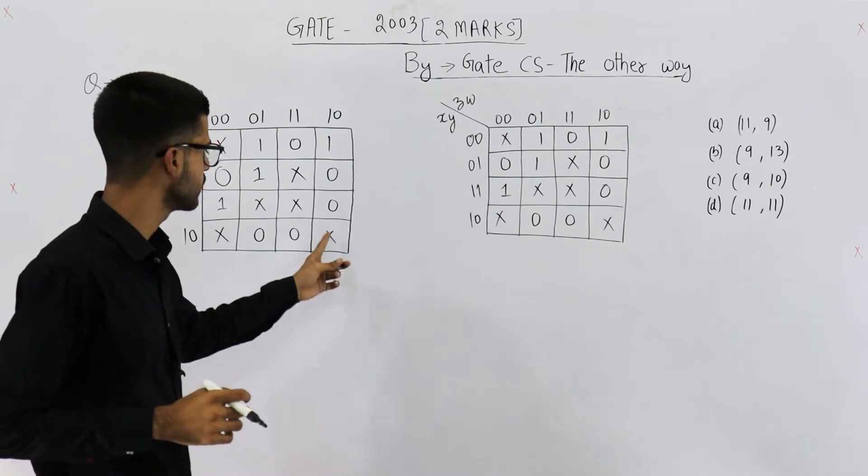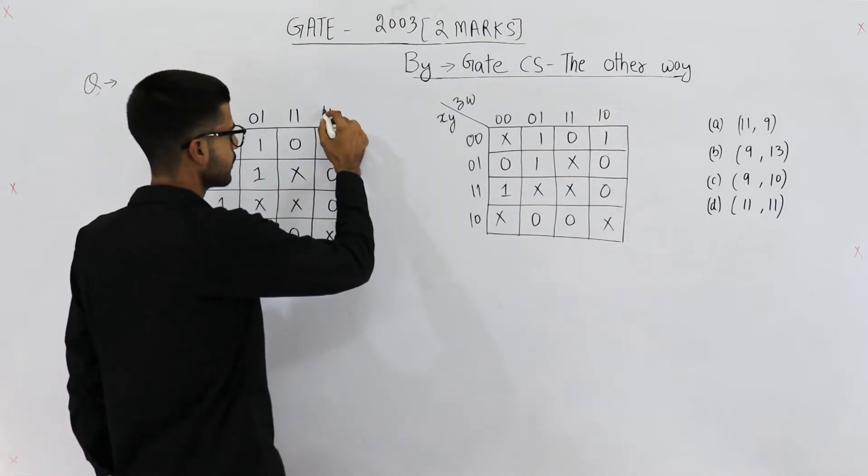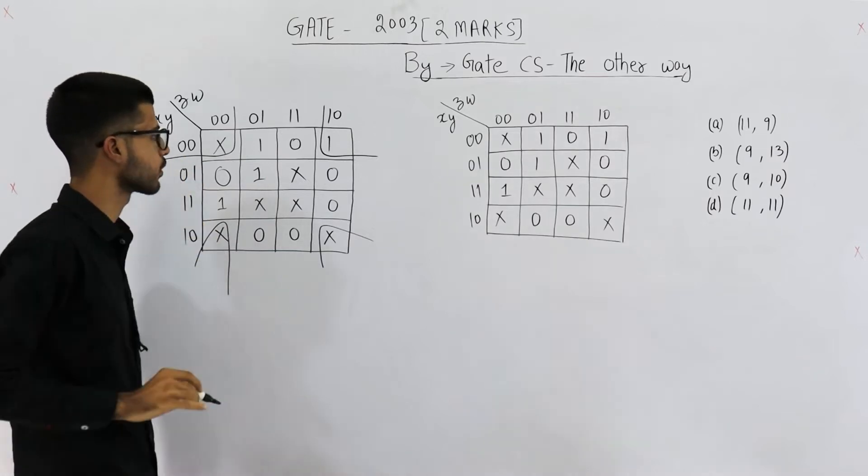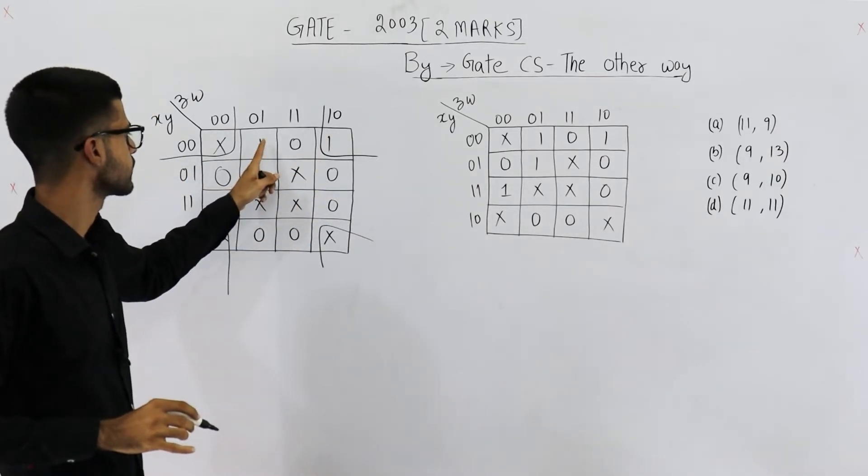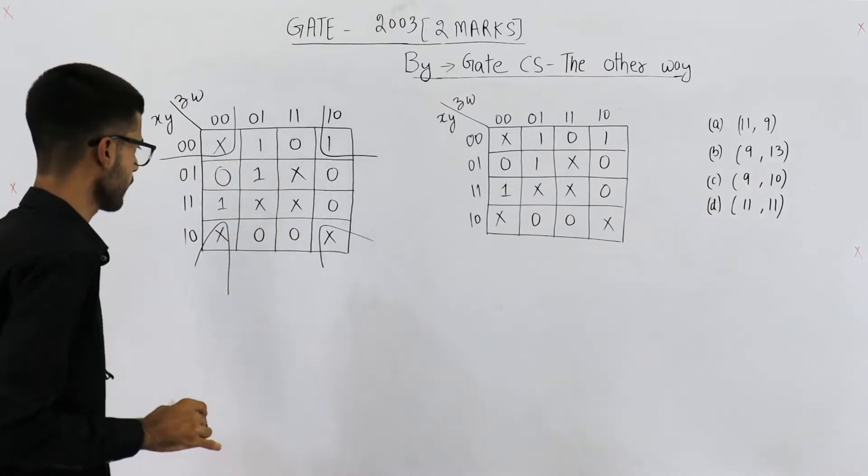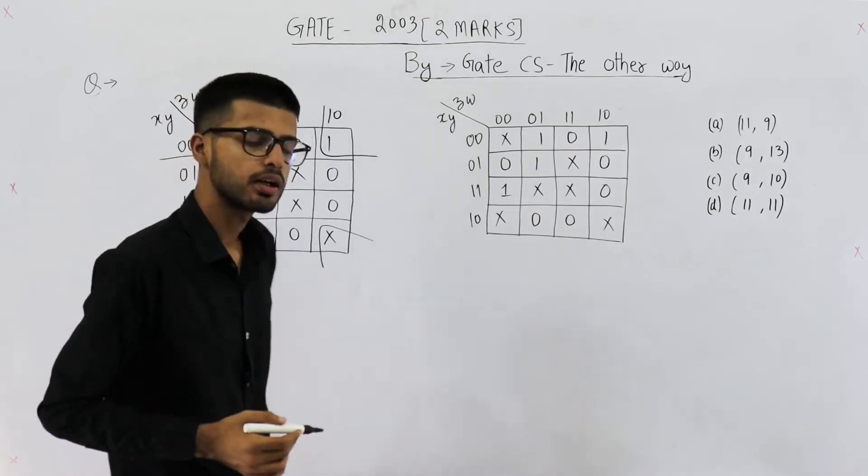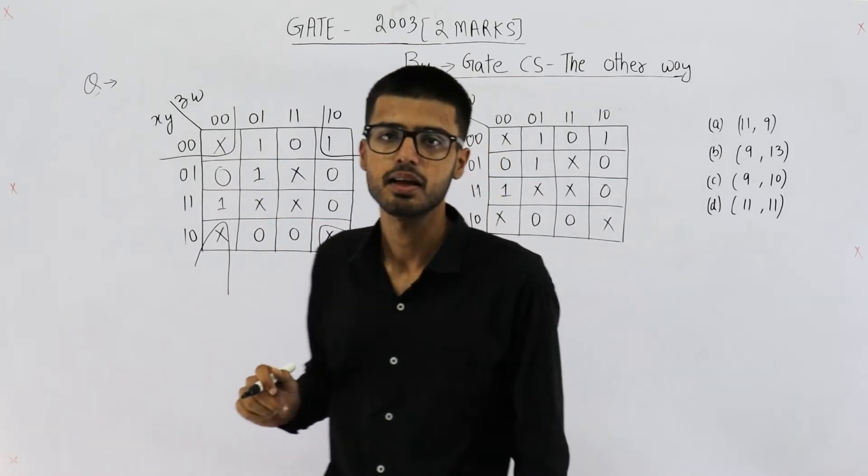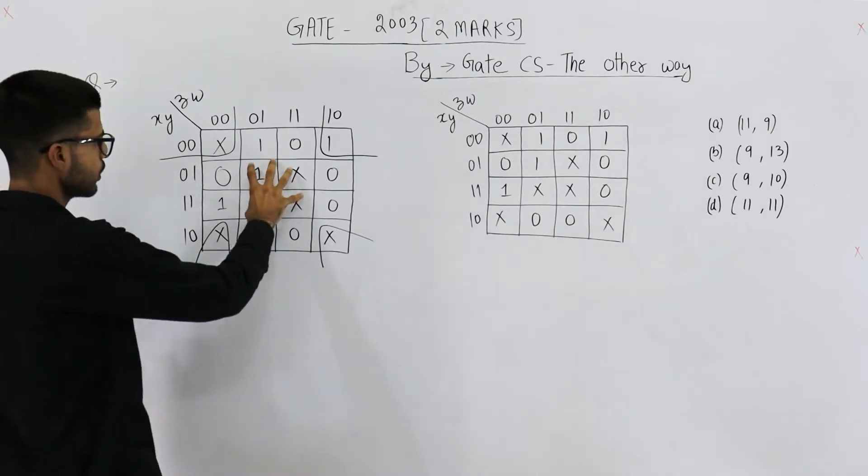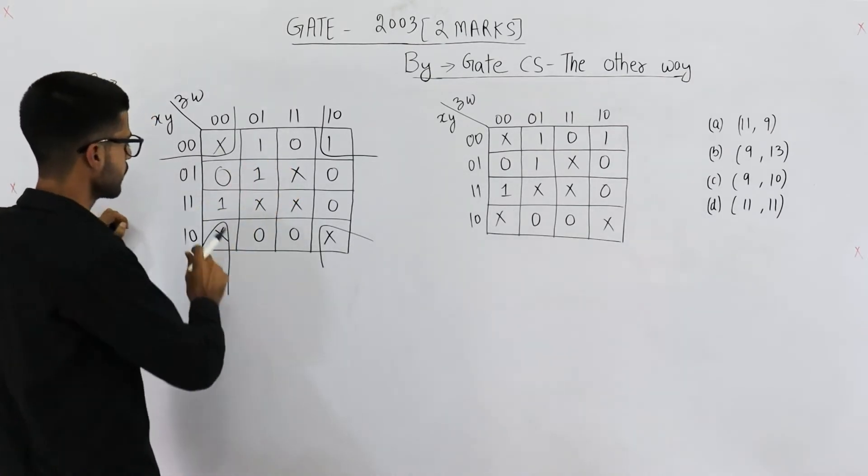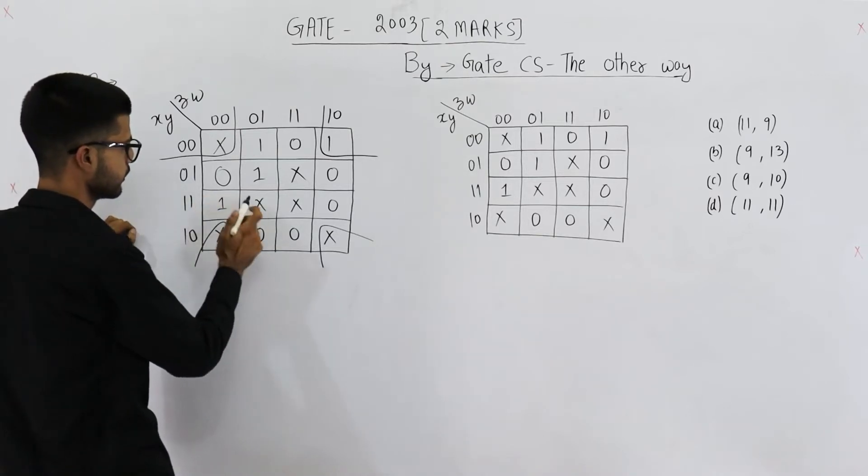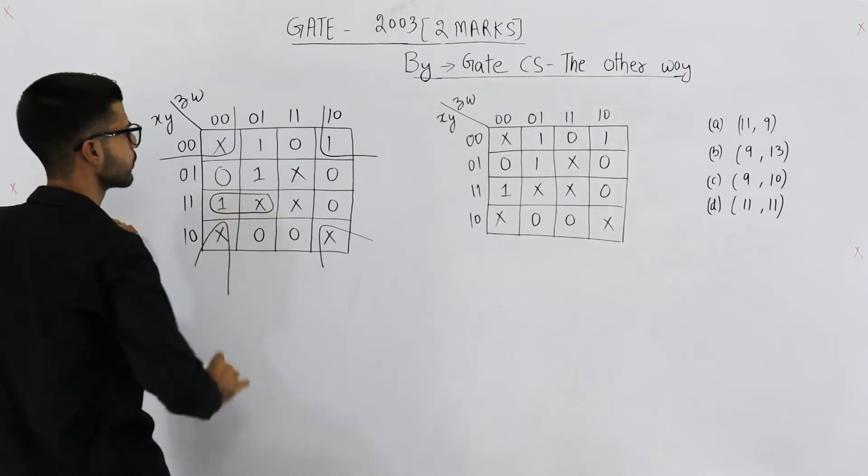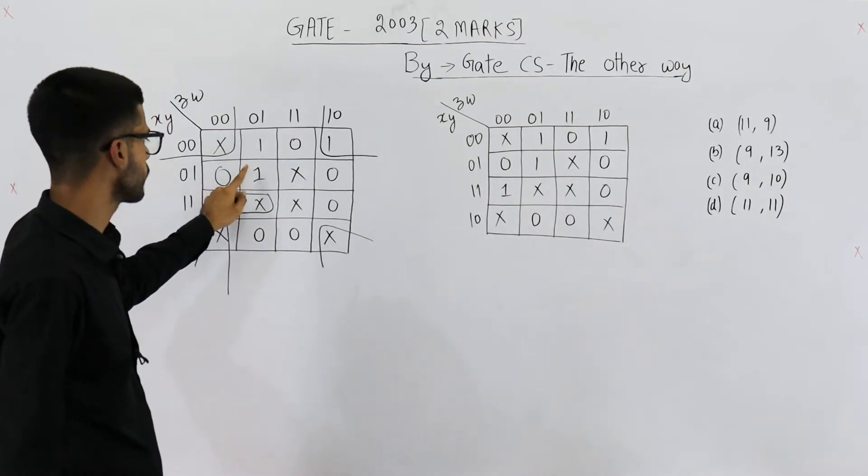And all these are don't cares. That means we can assume these don't cares to be one. And this one can be grouped like this. So we have a group of four. Now this one is done. Let's group these two. Some of you might think a group of four is possible. You might take this group of four. But that is incorrect. Let us see why is that incorrect. Let's group this one. This one can be grouped in two ways. Either you can group it like this or you can group it like this. Anyone is fine. Let's go with this grouping.